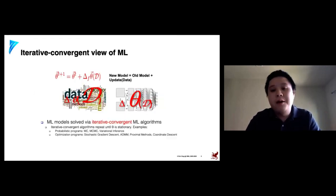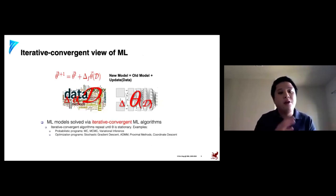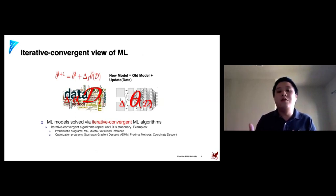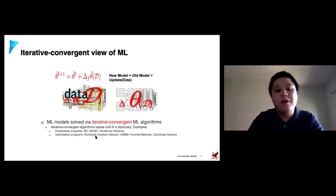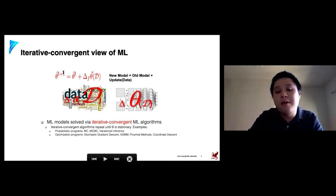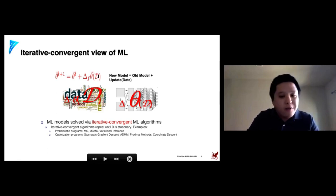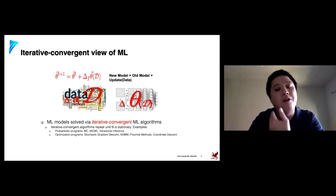To think about both probabilistic and optimization programs in a unified way, we look at them as part of a single master equation: the iterative convergent view of ML algorithms. This means it iterates towards a solution, and we have theoretical guarantees that it will converge to some fixed point or optima. In this view, let theta represent all model parameters, the superscript t represent the iteration index starting from t=1, and delta-f be an update function on the parameters which takes in the data d. We'll see how this applies to different ML programs and models shortly.